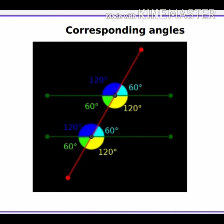Look at the picture. You can see four pairs of angles are colored, and they are equal. See the light blue colored angles — they are 60 degrees each. They are above the parallel lines and on the right side of the slanted line. They are equal.